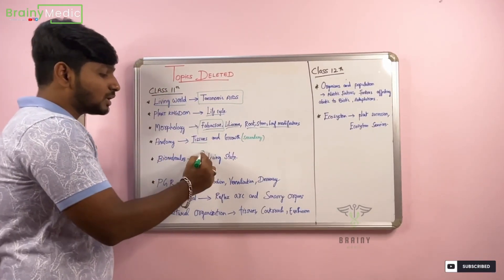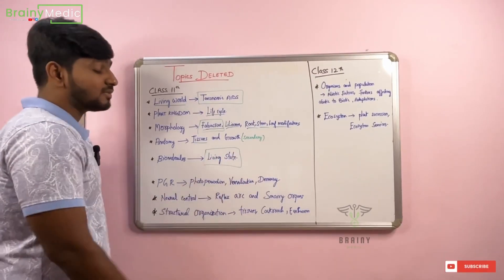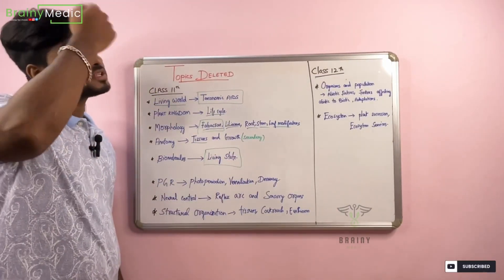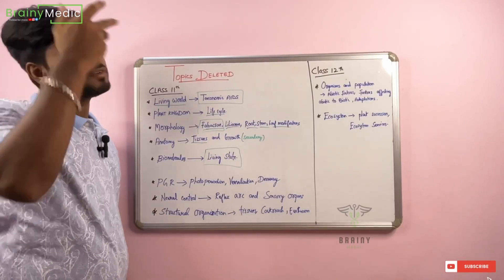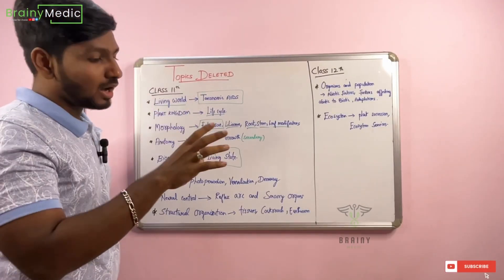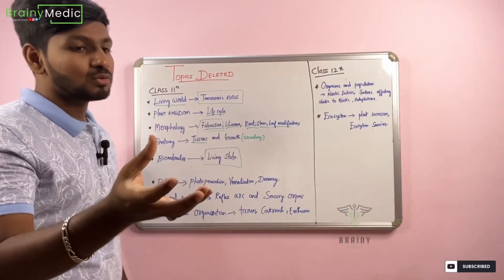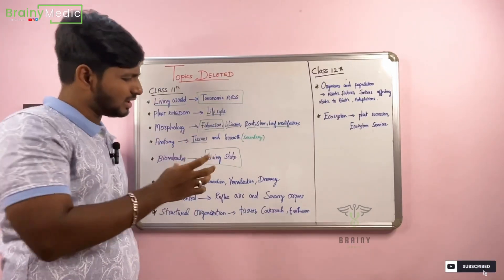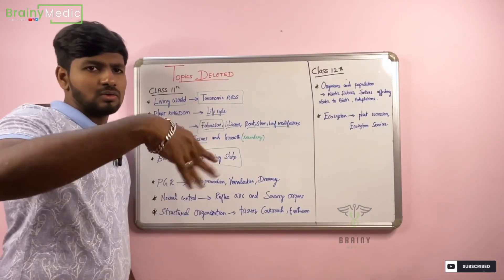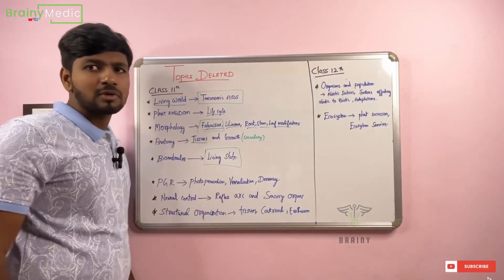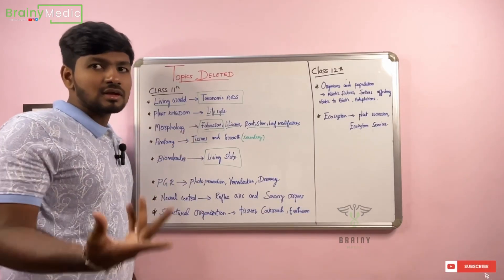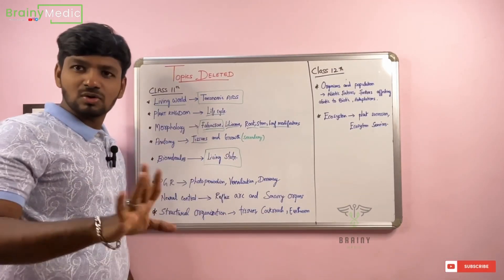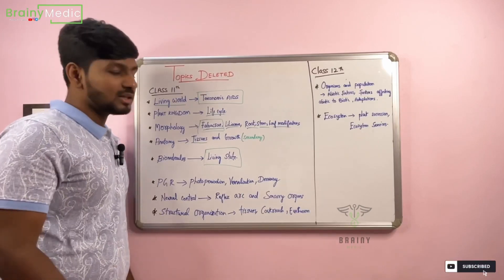Next, Biomolecules. Biomolecules covers Living State and one topic about Protein. Enzymes are also covered. If we lose the Living State topic, we can't get any questions from it. So it's better to learn it. That's how we learn.